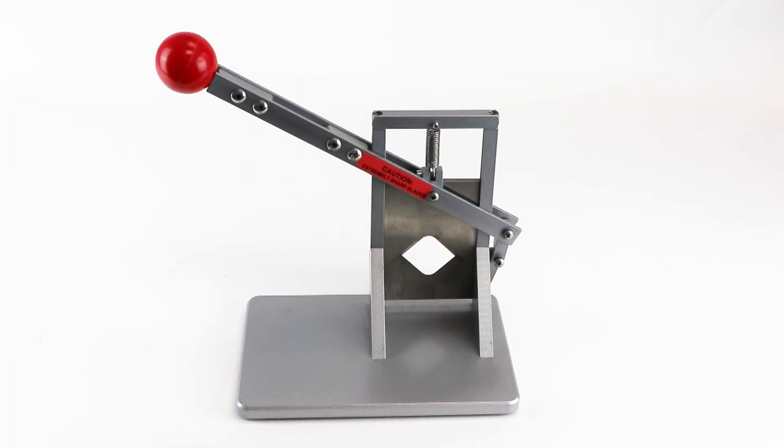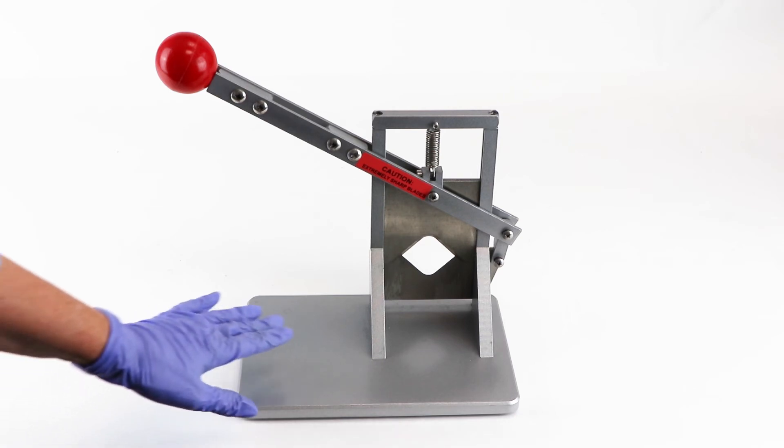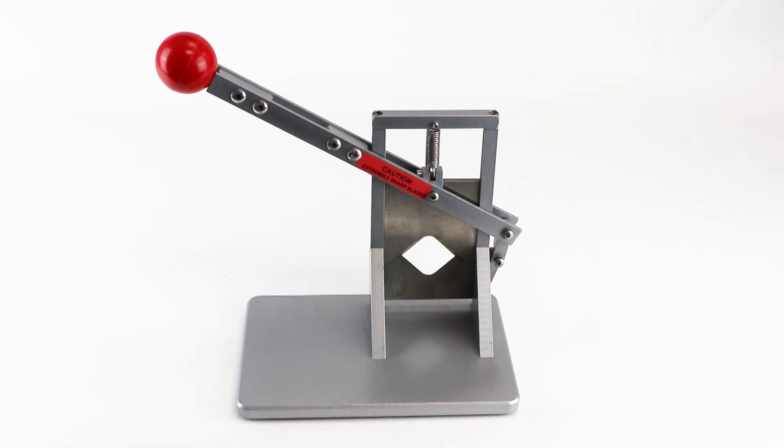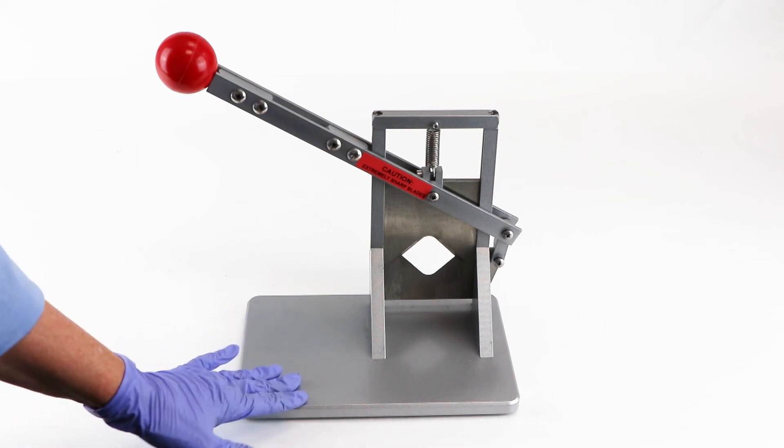The large base affords greater stability and the long handle provides extra leverage. The spring action prevents the blade from falling unexpectedly. The hardened stainless steel blades ensure longevity of the unit, and the fluoropolymer coating on the surface of the base makes cleanup easy.